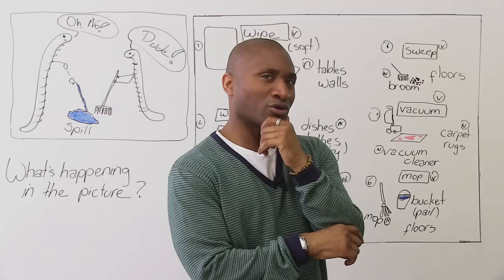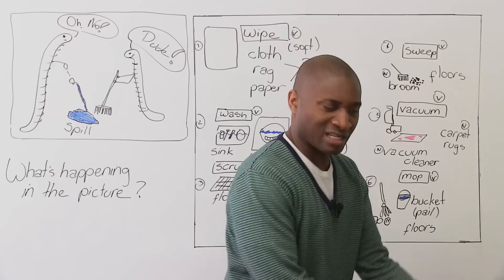But with a broom, if paper or you have sugar, dirt, you can clean it up, but water, it's not good for. So you use a broom to sweep. Sweep is the verb we use when we use brooms. And we sweep floors, not walls, people. Just the floor.